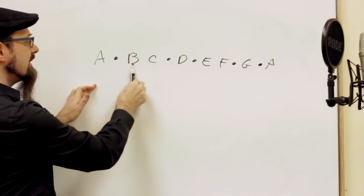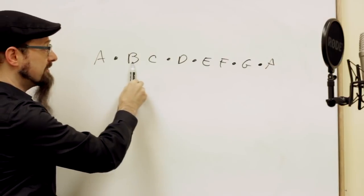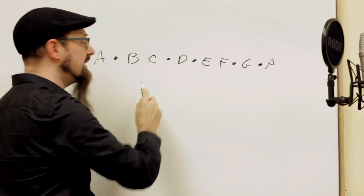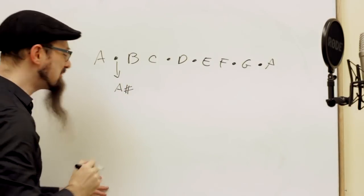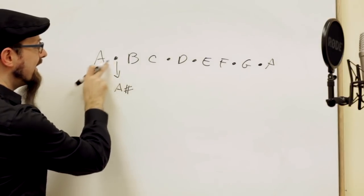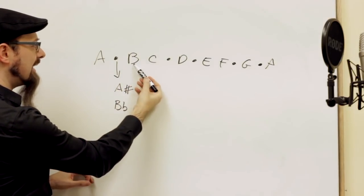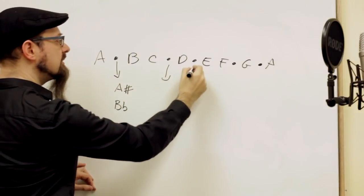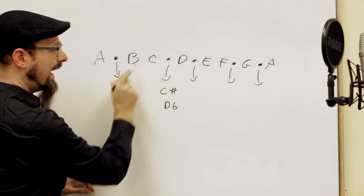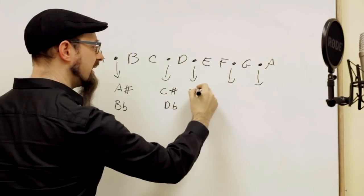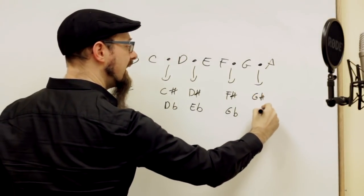If you can play the A note on a specific fret, on the next fret you find a note that can get two names. One is A sharp — that's not a hashtag, that's a sharp — meaning one half step higher than A. Or it can be called B flat, meaning one half step lower than B. All the naming is consistent: C sharp or D flat is one half step higher than C or lower than D; D sharp or E flat; F sharp or G flat; G sharp or A flat.